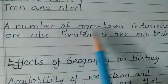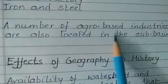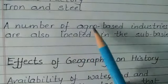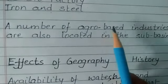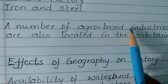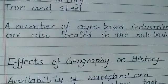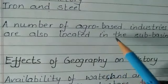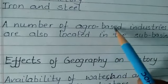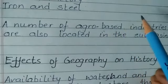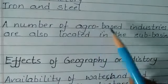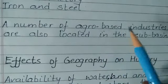A number of agro-based industries are also located in the basin. Agro-based industries means industries that take raw material from agriculture. For example, Kellogg's company, which provides cornflakes — the raw material is corn, which comes from agriculture. So Kellogg's is an agro-based industry.